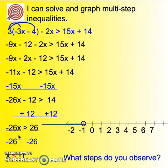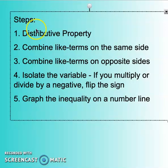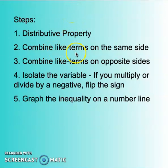So what steps did we do? Well we did the distributive property first, then we combined like terms on the same side. We combined like terms on the opposite side. We isolated the variable but we had to remember if you multiply or divide by a negative you flip the sign. And then we graph the inequality on the number line.